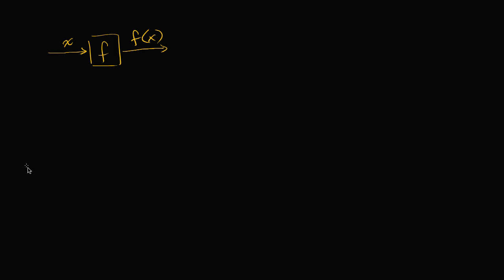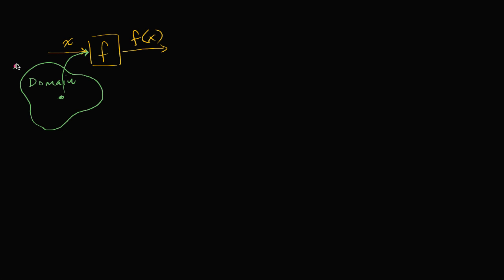We've already talked a little bit about the notion of a domain. A domain is the set of all of the inputs over which the function is defined. If I take a value in the domain and put that in for x, the function outputs f of x. If I take something outside of the domain and try to input it into this function, the function will say it's not defined for that input.